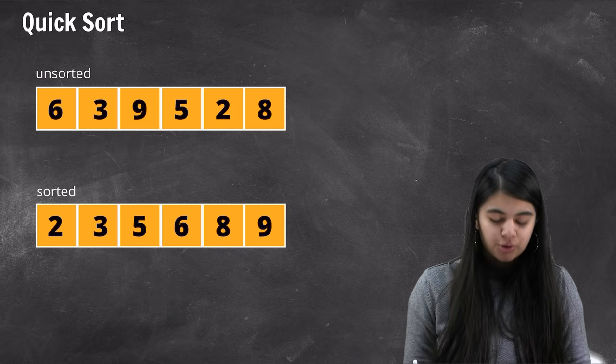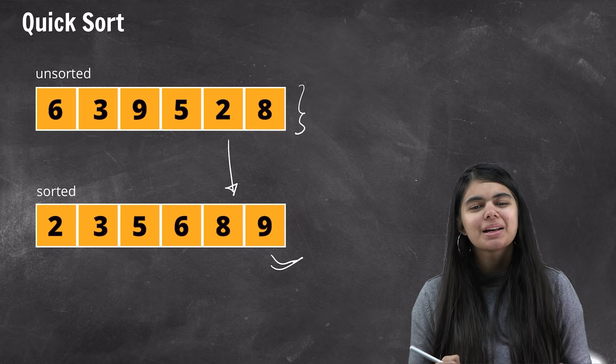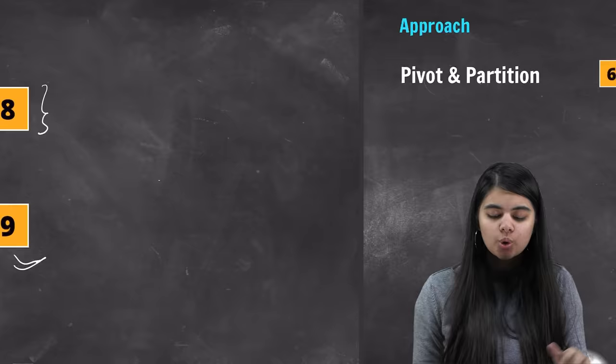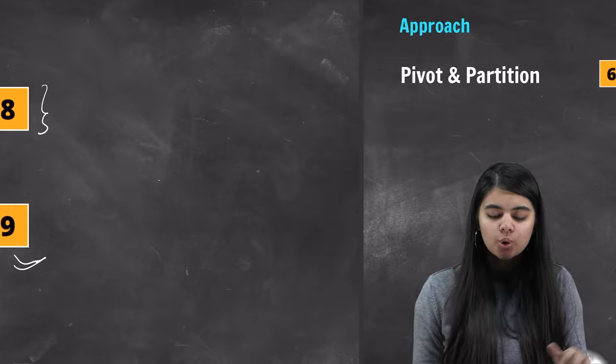In quicksort, the first thing we need to do is convert an unsorted array into a sorted array. A sorted array is one where elements are arranged in ascending or descending order. Before reading quicksort, we have to remember two important keywords. The first keyword is pivot and the second keyword is partition.